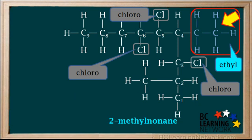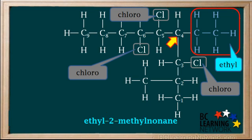The next group we need to add to the name is the ethyl group. So we add the word ethyl here. All numbers between words in a name have dashes on both sides, as you can see with the 2. Now the ethyl group is attached to carbon number 4 in the chain, so we add a 4 and a dash here in front of the ethyl.